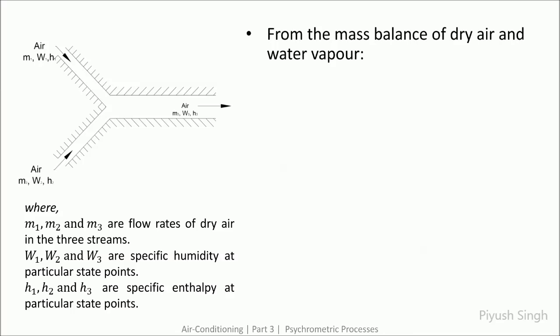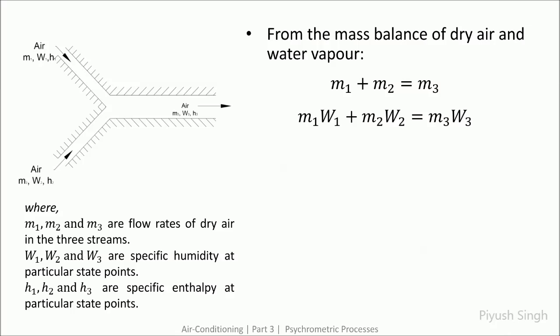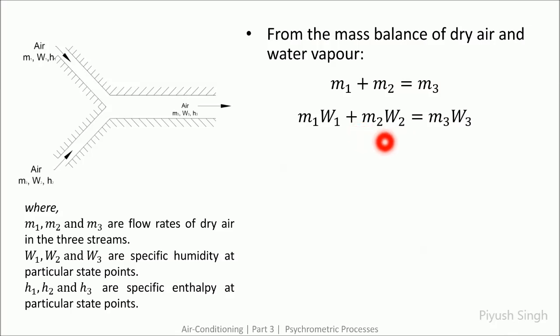Due to conservation of mass, the total amount of dry air entering the system remains constant. Since there is no additional rejection of heat, the amount of water content remains constant. M1W1 gives the amount of water vapor entering at inlet 1, and M2W2 gives the amount of water vapor entering at inlet 2, where M2 is the mass of dry air and W2 is the specific humidity. Since there is no addition of moisture, the total moisture content at the outlet equals that at the inlet.